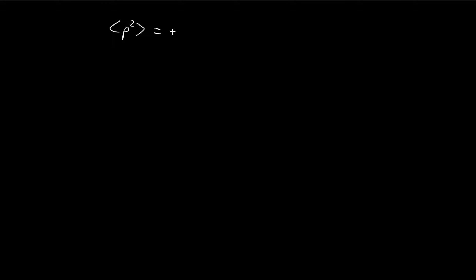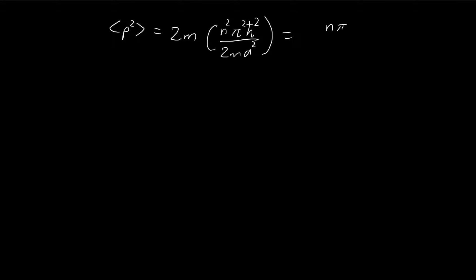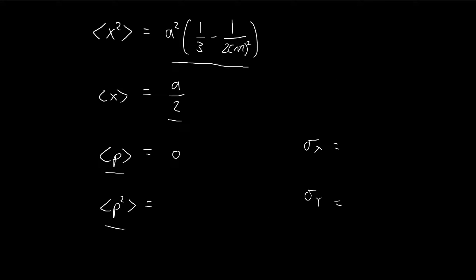Then En, as found before — David Griffiths proved this in the earlier examples — the energy level corresponding to the nth stationary state is given by that expression. So in the end, the expected value of p squared equals (nπħ/a) squared.